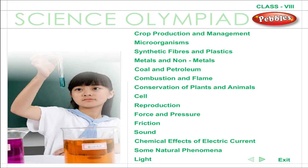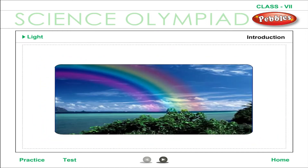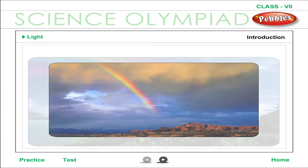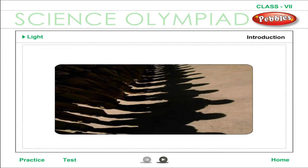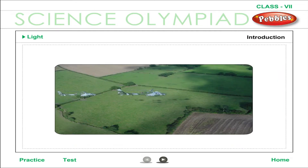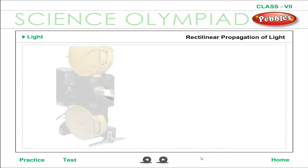Science Olympiad, Class 8: Light Introduction. Light is a form of energy; it travels at a very high speed. We are able to see things only because light from them enters our eyes. Shadows occur due to the fact that light travels in a straight line — this property is called rectilinear propagation of light. Light exhibits typical phenomena of wave motion such as reflection, refraction, and formation of images.